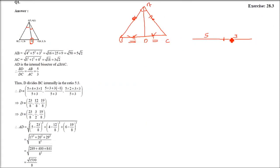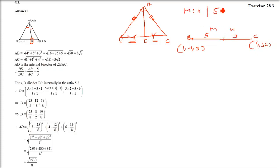The point B and C we already have: 1, minus 1, 3 and 4, 3, 2, 5. So BD by DC equals AB by AC, which is phi by 3. AB is phi root 2, AC is 3 root 2, so phi by 3. We know that BD by DC equals phi by 3, so we have a ratio of internal division. The point divides the line BC internally in the ratio phi is to 3.